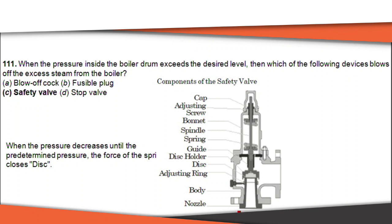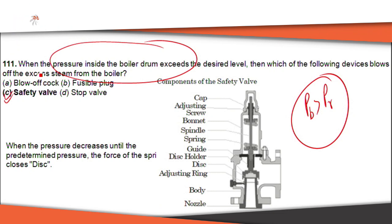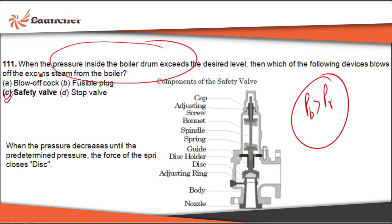The next question: what happens if the pressure inside the boiler exceeds the desired level? In that case, we need a safety valve. When excess steam is generated, the safety valve releases the excess steam, reducing pressure in the boiler tank. The best way to reduce excess pressure is to use a safety valve.